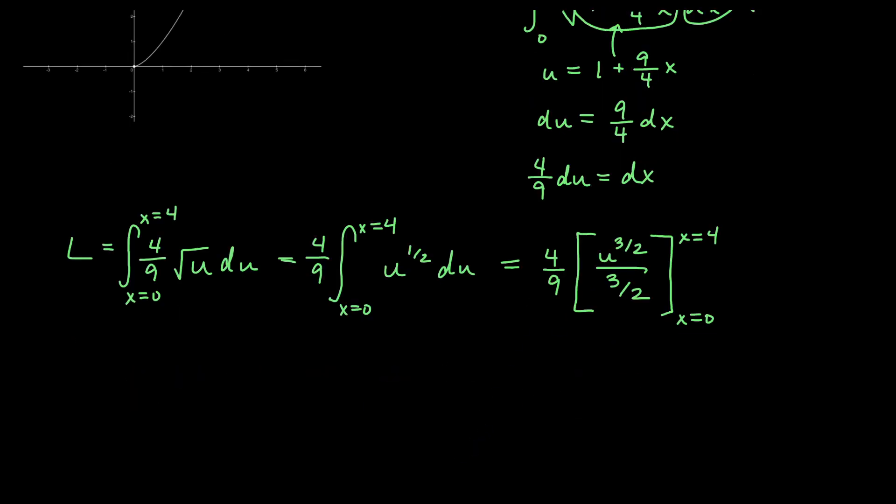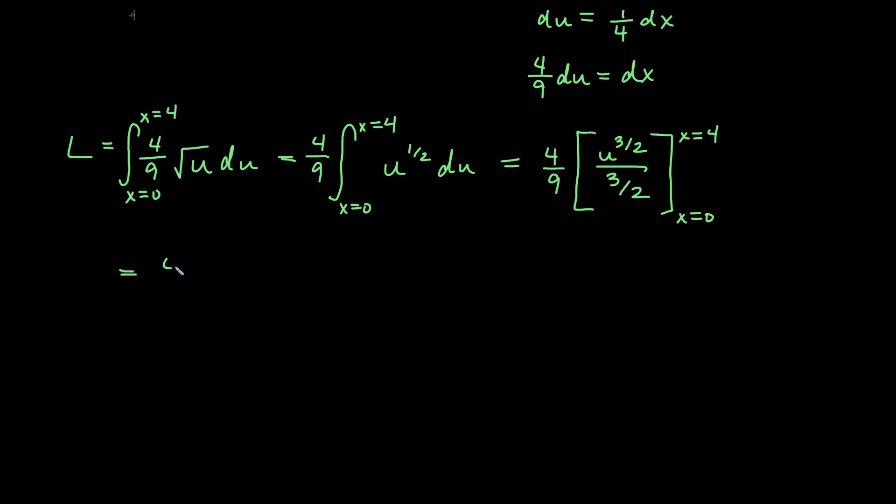Now a couple of things. Divide by three halves is going to be the same as multiply by the reciprocal. So you're really going to have 4 ninths times 2 thirds instead of divide by 3 halves, u to the 3 halves. I'm going to multiply my constants out, so I'll actually get 8 over 27 in the front. And I'm going to go ahead and replace my u. And if you remember, u was 1 plus 9 fourths x, to the 3 halves. And now that I'm back in terms of x, I can just rewrite the bounds as 0 to 4.